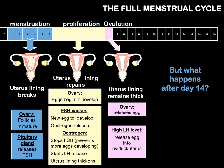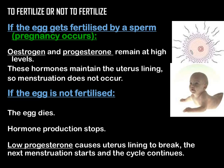After day 14, it depends on whether the egg is fertilised or not. If the egg is fertilised by a sperm, pregnancy will occur. This causes oestrogen and progesterone levels to remain high. Progesterone is produced to maintain the uterus lining, ensuring that menstruation does not occur and the uterus lining is not destroyed. However, if the egg is not fertilised, the egg dies. Hormone production will stop, resulting in low progesterone levels, which causes the uterus lining to break down and the next menstruation period starts, and the cycle continues.